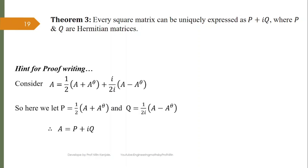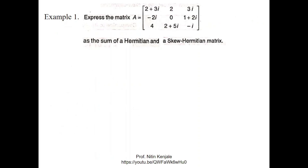Now we will see some examples on these theorems. Example 1 gives a 3×3 matrix A which we have to write as sum of Hermitian and skew-Hermitian matrices. By Theorem 2, we write A = (1/2)(A + A^θ) + (1/2)(A - A^θ), where P = (1/2)(A + A^θ) is Hermitian and Q = (1/2)(A - A^θ) is skew-Hermitian. So let us first find A^θ.